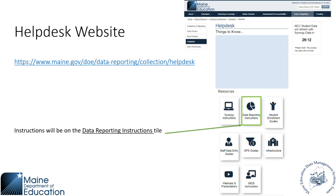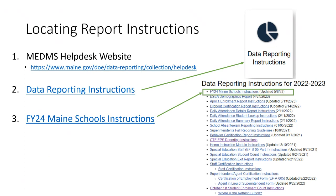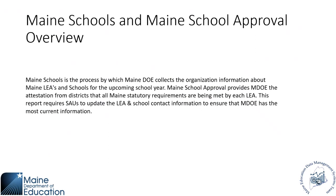Navigating the Main Schools report: on the Help Desk website, there is a Data Reporting Instructions tile. On that tile you'll be able to link to the instructions page for this report. On the Data Reporting Instructions page you have the Fiscal Year 24 Main Schools instructions, which will take you to the instructions document with step-by-step guidance on what you need to do and keep in mind.